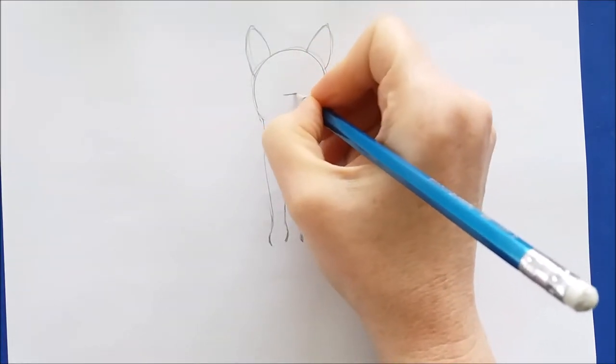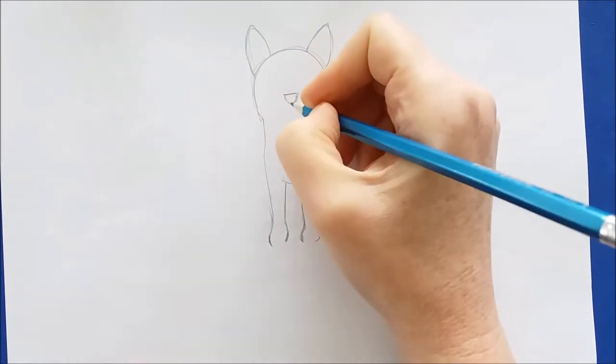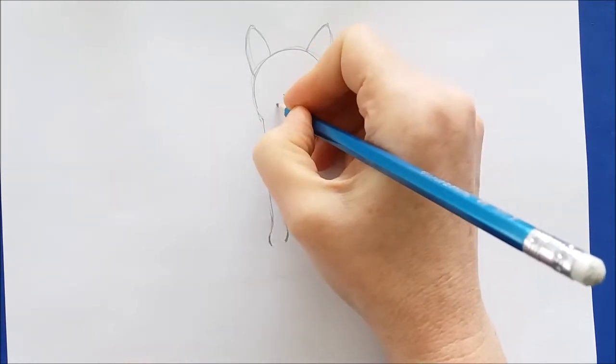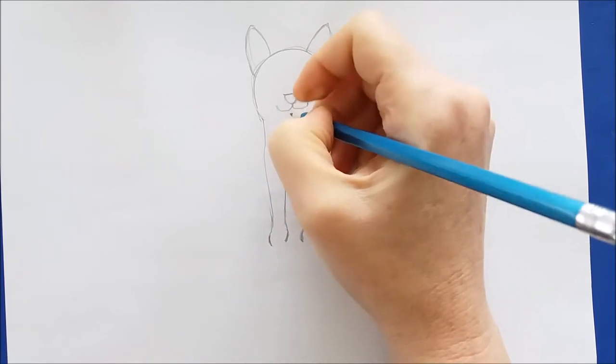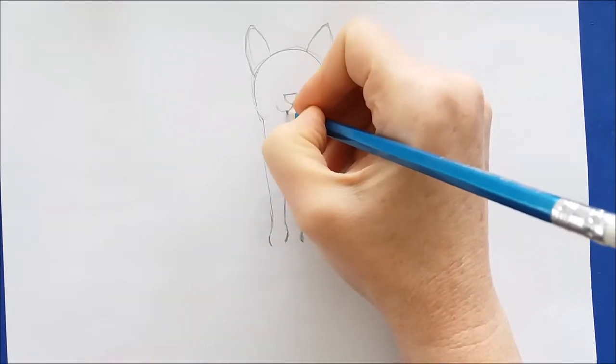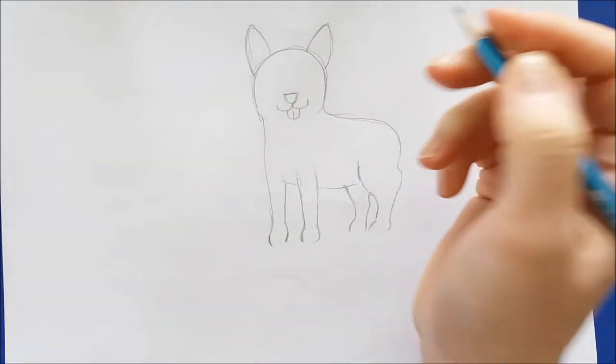Now I'm going back to the face and I'm going to add the nose, which is just a little upside down triangle with rounded points. Then I'm going to give this dog a little smile. I'll draw two curving lines out for his cheeks and then a U shape for his tongue.